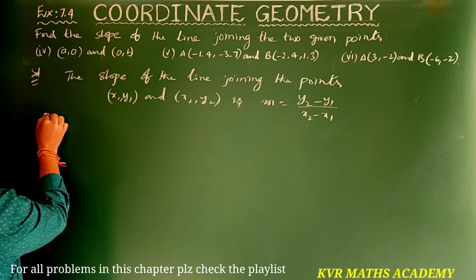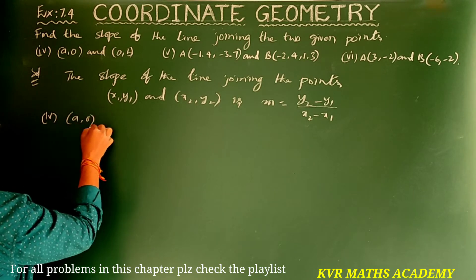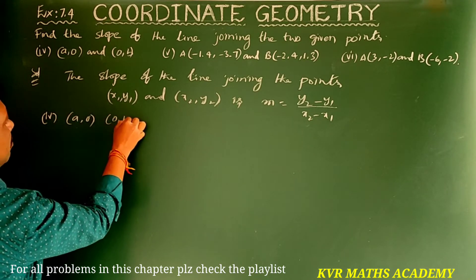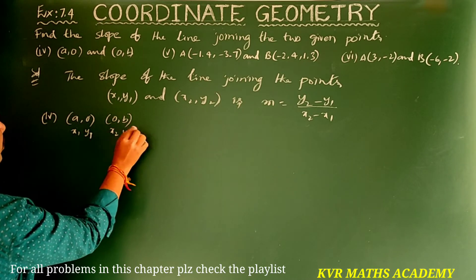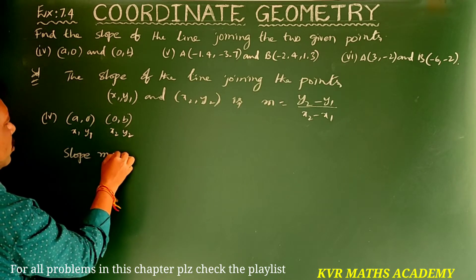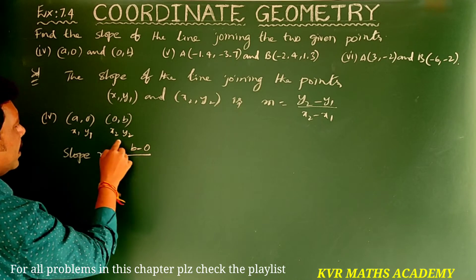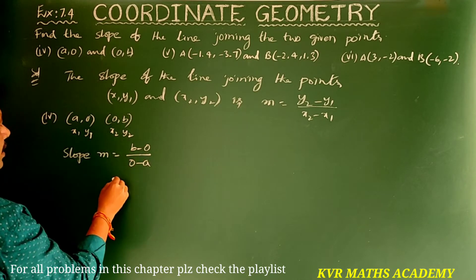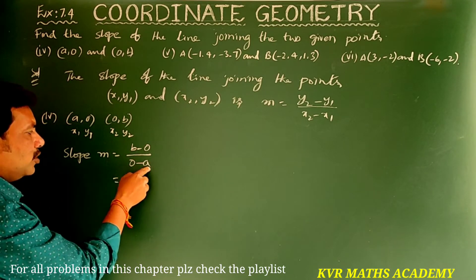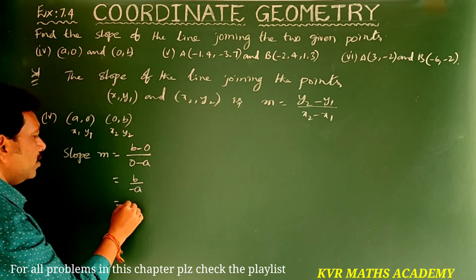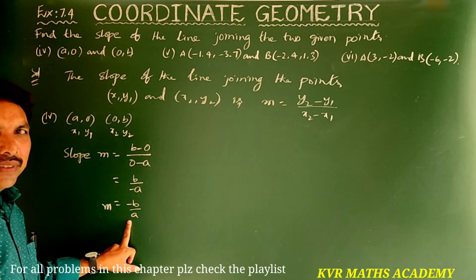Fourth one: given points are (a, 0) and (0, b). These are x1, y1 and x2, y2. Slope m = (b - 0) / (0 - a) = b / (-a). So slope m is equal to -b/a.